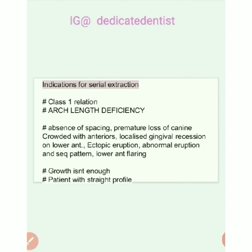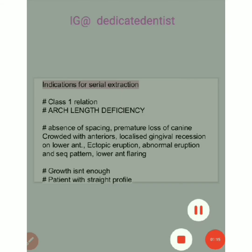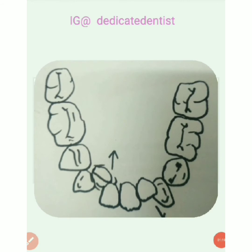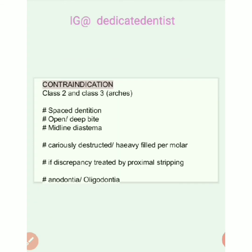Conditions that denote arch length deficiency include: spacing, premature loss of canine, crowding of anteriors, lower anterior flaring, ectopic eruption, abnormal pattern of eruption and shedding, and localized gingival recession in the lower anteriors. The clinical picture of tooth material and arch length discrepancy shows teeth not properly aligned — some more lingually placed, some more labially inclined — and lower anterior flaring, suggesting a need for serial extraction in Class I cases.